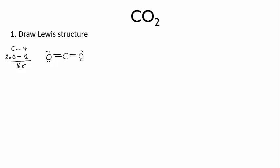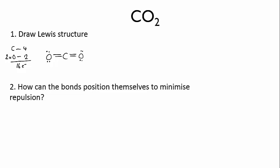So the question now is, how can the bonds position themselves so that they minimize repulsion? Note that for the purposes of VSEPR, we count each collection of bonding electrons as essentially a single bond. By this I mean, although there's a double bond joining the carbon to each oxygen, we're not trying to separate out the two bonds within each double bond. Those four electrons are strongly localized in between the carbon and oxygen atoms.